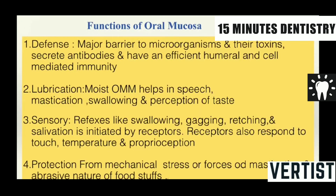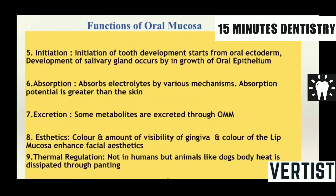Protection from mechanical stress or forces from the mastication and abrasive nature of the foodstuffs is accounted as a function of the oral mucous membrane. The oral ectoderm or the oral ectodermal apparatuses begin from the epithelium and go down — that is the initiation of tooth development starts from the oral ectoderm. Development of salivary gland occurs by the ingrowth.